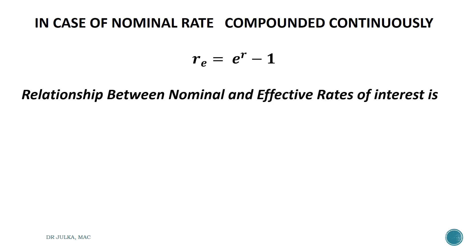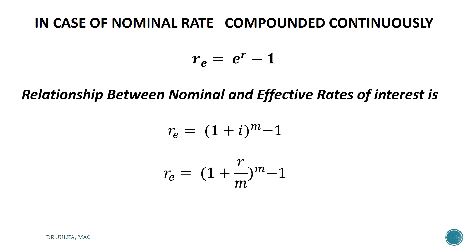To derive this formula, we use the relationship between Nominal and Effective Rate of Interest. That is Re equals 1 plus i, whole raised to the power m, minus 1, where i equals r upon m and m is the number of times interest is compounded in a year.